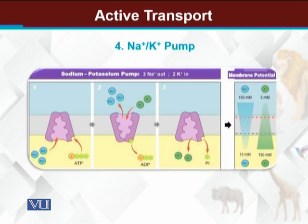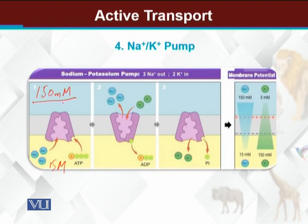Looking at the diagram: sodium ions outside the cell have a very high concentration - 150 millimolar - while inside the cell, sodium ion concentration is 15 millimolar. That means outside concentration is 10 times greater. But despite this, sodium ions need to be taken outside the cell because for nerve impulse generation, maximum sodium ions outside the cell is necessary. For this, the sodium-potassium pump protein picks up 3 sodium ions from inside (low concentration) and moves them to outside (high concentration) - this is the active transport of sodium ions.